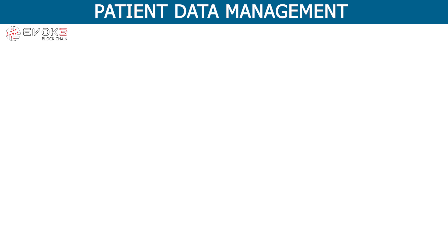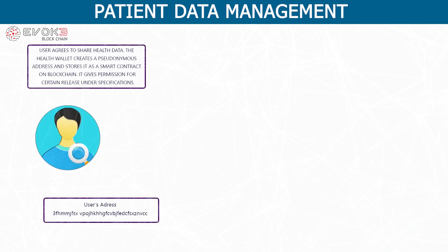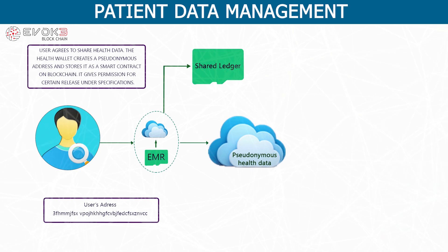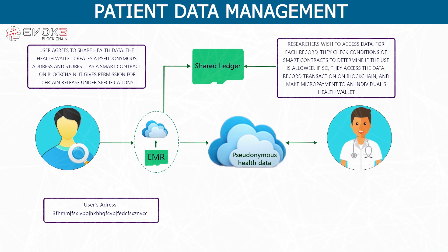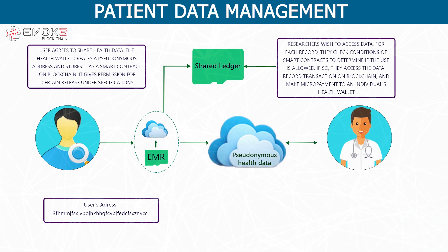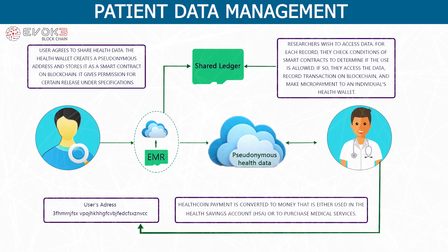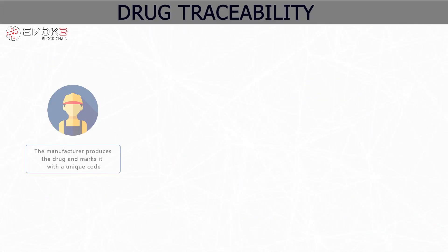Healthcare use case — patient data management. The user agrees to share health data; the health wallet creates a pseudonymous address and stores it as a smart contract on the blockchain. It gives permission for certain data releases under specified conditions. Researchers wishing to access data check the conditions of smart contracts to determine if use is allowed. If so, they access the data, record the transaction on blockchain, and make a micropayment to the individual's health wallet. The health coin payment is converted to money used in a health savings account (HSA) or to purchase medical services.